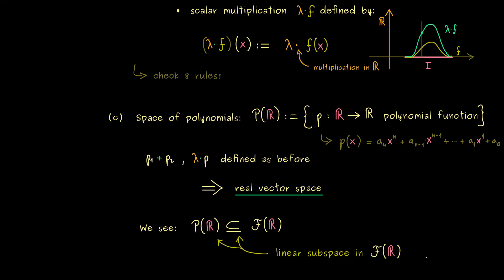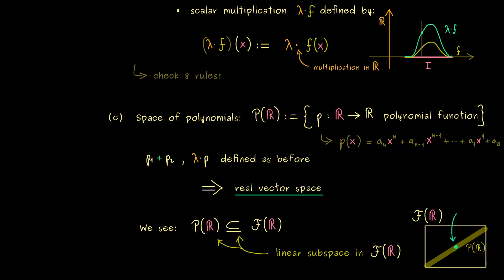The picture we could have in mind is the large vector space F(R) with P(R) inside as a linear subspace. In particular, they share the same zero vector. The last question is: what is this abstract zero vector? Of course it has to be a function as well, because we live in the function space here. Looking at the operations, it has to be the zero function — the function that sends every point from the domain to zero. Remember that: this is our abstract zero vector in the function space or in the polynomial space.